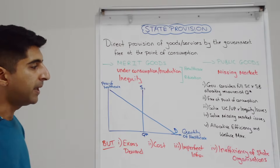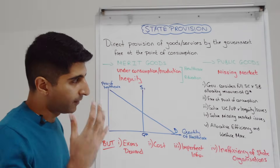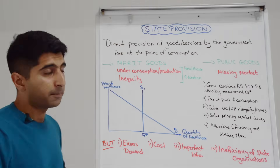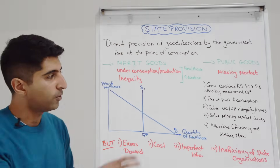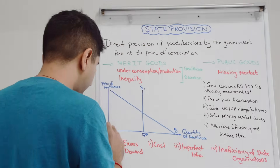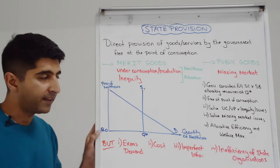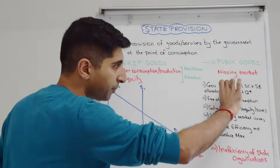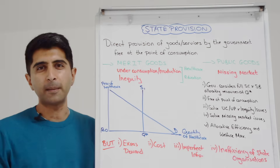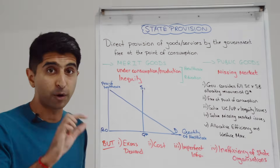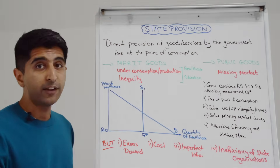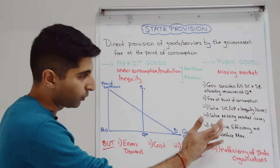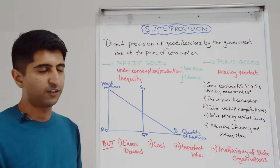The mistake here would be to take the price from equilibrium. With state provision, the government provides this good or service free at the point of consumption — there is universal access for all consumers, because the price is zero. So you've got to make sure you add that on: the price is nothing, there is universal access. Putting these two together, we can solve the under-consumption and under-production of merit goods, solve inequity issues given universal access, solve any missing market public good issues, and reach the socially optimum level with allocative efficiency and maximum welfare.